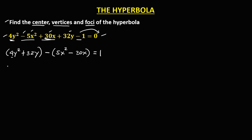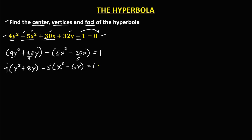Then we need to put this number outside. So we have 4 times (y squared plus 8y) — since 32 divided by 4 is 8 — then minus 5 times (x squared minus 6x) — since 30 divided by 5 is 6 — then equals 1.